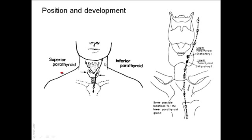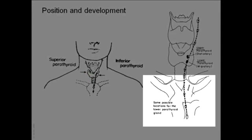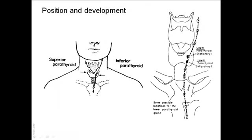The superior parathyroid gland is more constant in its position, located a short distance above the entry of the inferior thyroid artery, and develops from the endoderm of the fourth pharyngeal pouch. The inferior parathyroid gland is more variable in position, usually embedded behind the lower pole but often found elsewhere, even in the superior mediastinum. It develops from the endoderm of the third pharyngeal pouch, where the thymus also develops, and the thymus may therefore carry the inferior parathyroid with it when it descends into the thorax.